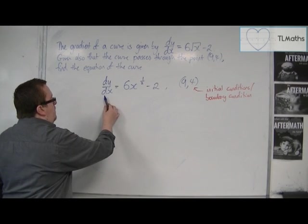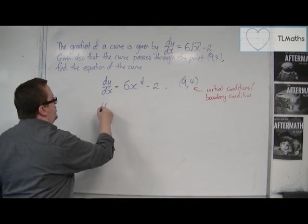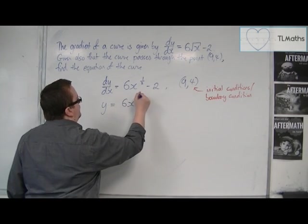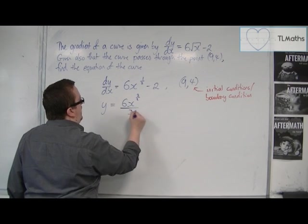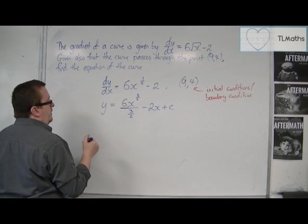So from dy/dx = 6x^(1/2) - 2, we can easily integrate this. Add 1 to the power, divide by the new power. So we have -2x and a plus c, a constant of integration.